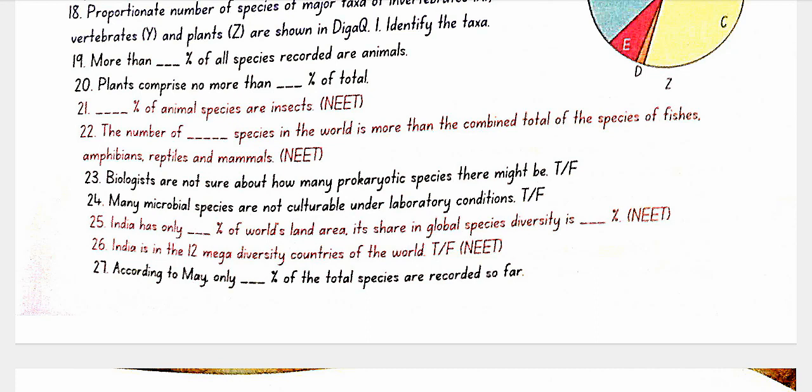Biologists are not sure about how many prokaryotic species there might be — true. Many microbial species are not culturable under laboratory conditions — true. India has only 2.4% of the world's land area, yet its share in global diversity is 8.1%.